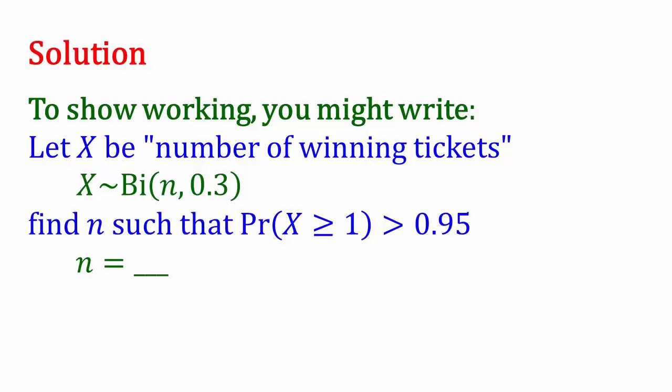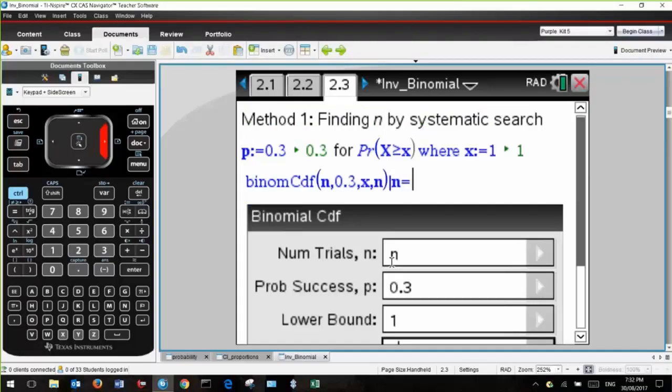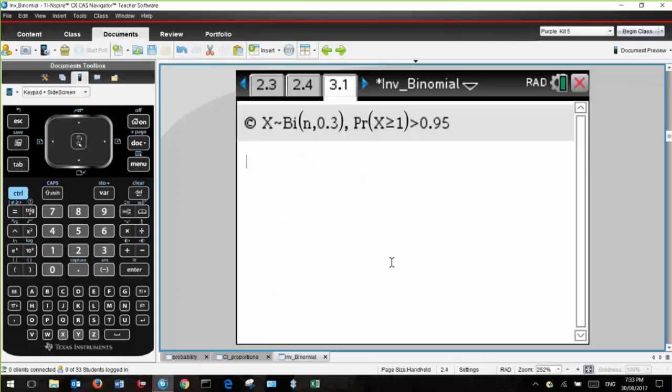We want to find N such that the probability that X is greater than or equal to 1 exceeds 0.95. There's a number of ways of doing this. The first way is a first principles approach, which is systematic guess and check. That is a valid way, and before operating system 4.4 was released, it was probably the best way of doing it in my view. In a calculator page we want to find binomial cumulative distribution greater than or equal to 1, and see where that value exceeds 0.95.